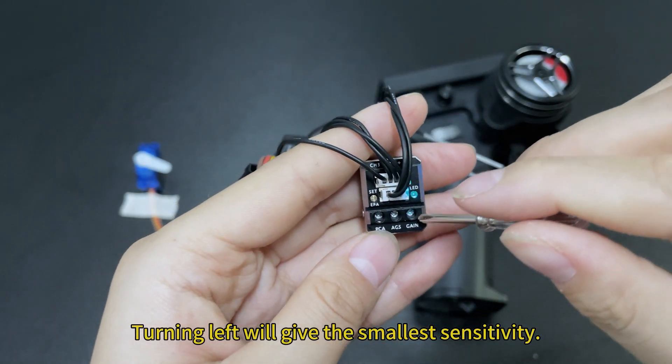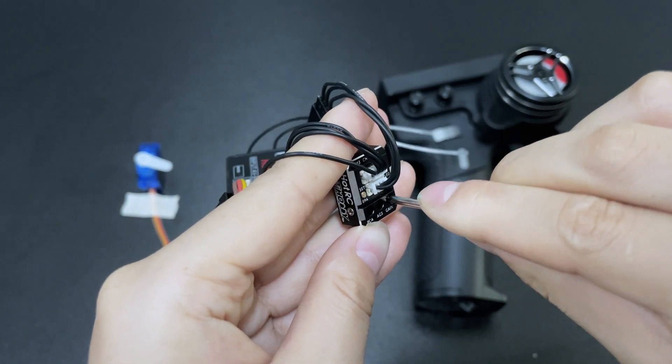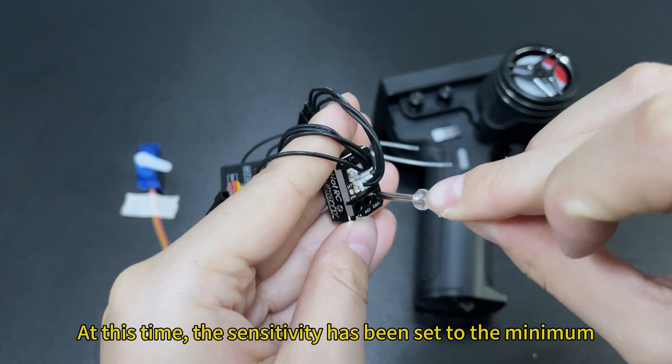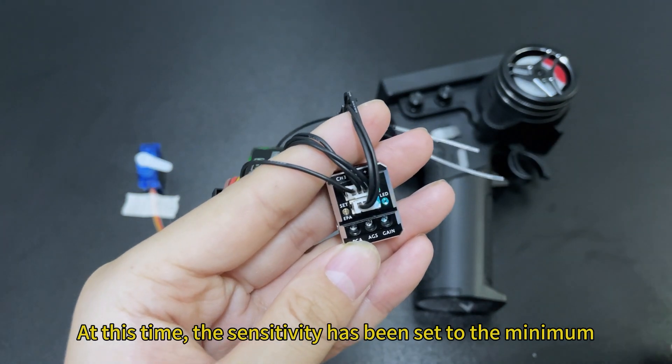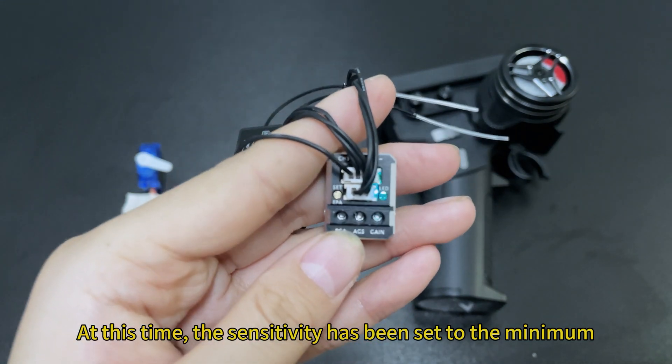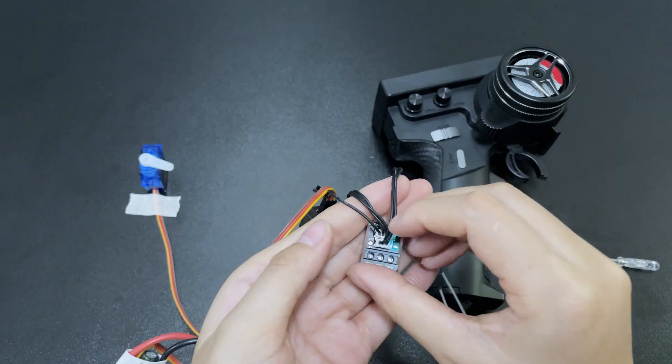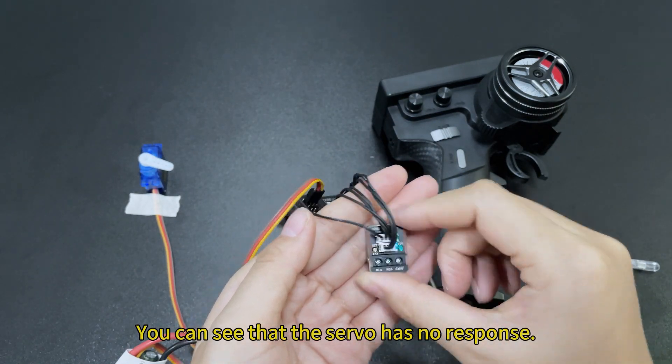Turning left will give the smallest sensitivity. At this time, the sensitivity has been set to the minimum. You can see that the servo has no response.